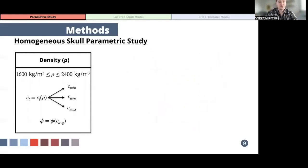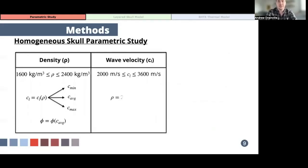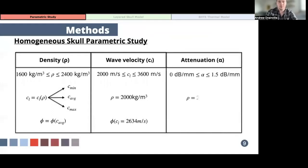To examine the effect of changes in skull speed of sound independent of other skull properties, simulations were performed in which the speed of sound in the skull was varied between 2000 and 3600 meters per second. The phase delay profile was calculated based on a presumed skull speed of sound of 2634 meters per second, and then this profile was kept constant while the actual speed of sound in the skull was varied from 2000 to 3600 meters per second. And finally, given the amount of disagreement on how best to derive attenuation properties from CT data, simulations were performed in which the attenuation coefficient of the skull was varied between zero and one and a half dB per millimeter with the speed of sound and density held constant.